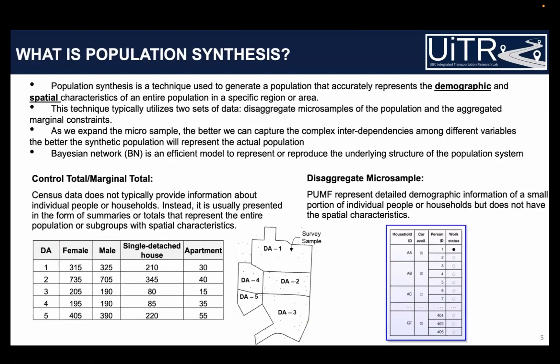Basically, what population synthesis is — it's a procedure where we use existing data to generate synthetic data that represents two broad aspects of the actual population. One is the demographic attributes such as age, gender, income, and dwelling type. The second is spatial attributes — for example, where they live and where they work.